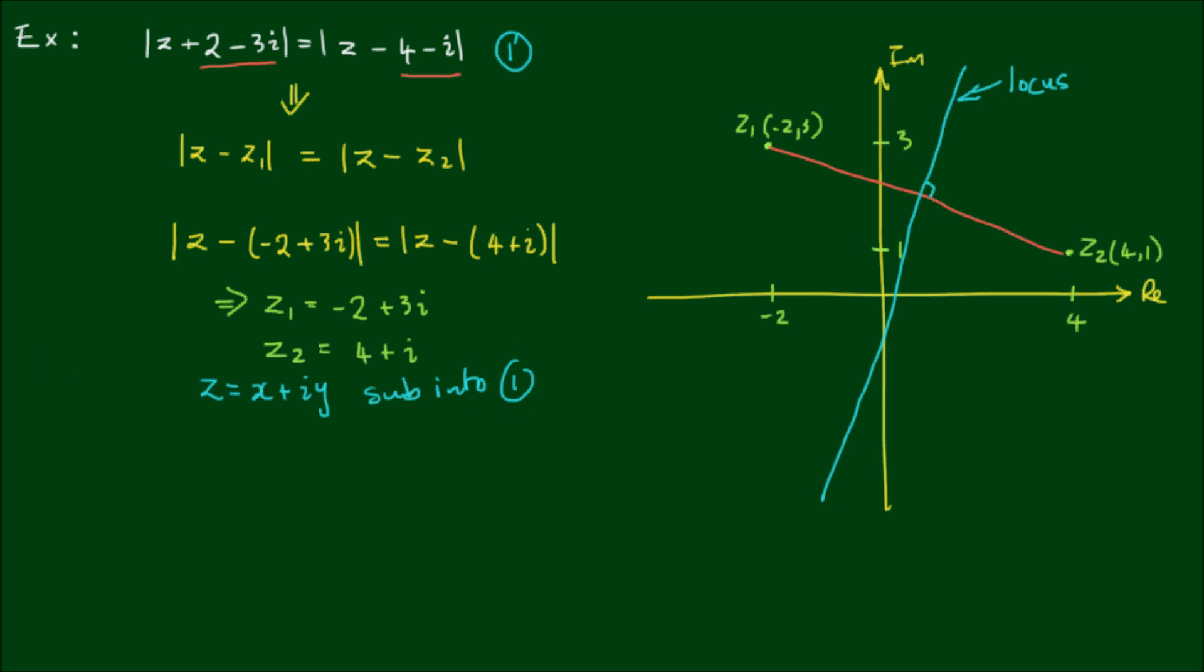I will get |x + iy + 2 - 3i| = |x + iy - 4 - i|. And let's collect the real and the imaginary terms together. So in the next line I'll write |(x + 2) + i(y - 3)| = |(x - 4) + i(y - 1)|.